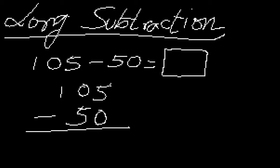If we do the subtraction now — in the ones place it's 5 minus 0, so we get 5. Then it's 0 minus 5; now this 0 in the tens position is basically 10, so 10 minus 5, we get 5.